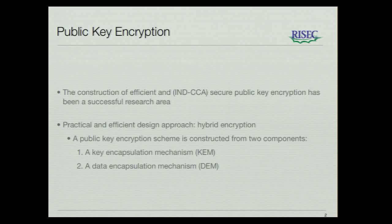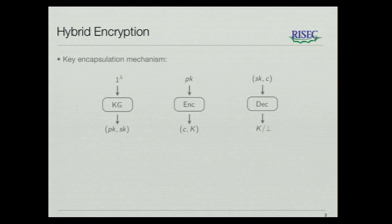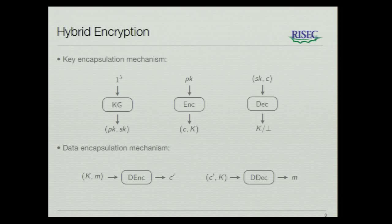A very practical and efficient approach to the construction of these is hybrid encryption. In a hybrid encryption scheme, we have two components: a key encapsulation mechanism, a KEM, and a data encapsulation mechanism, which we call a DEM. A KEM is defined by these algorithms and will allow the encryptor to compute an encapsulation of a random key K, and will later allow the decryptor to recover this key from the encapsulation. The DEM is simply a symmetric key encryption scheme, and when you combine these two components in the obvious way, you will obtain a public key encryption scheme.